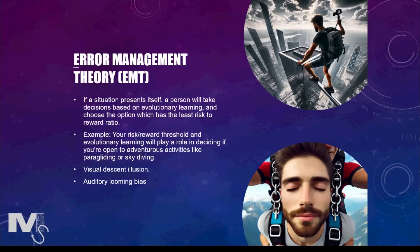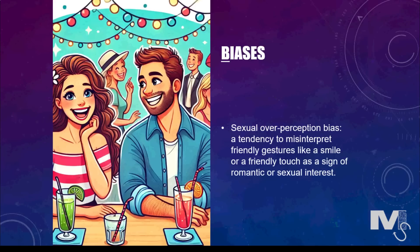The essence of error management theory is to study mechanisms which try to ensure that we are safe rather than sorry. An interesting application of error management theory is to predict adaptive biases in dating. A 2012 research study suggested that one adaptive bias in men is called the sexual over-perception bias — meaning men have a tendency to interpret friendly gestures like a smile or a friendly touch from a potential mate as a sign of romantic or sexual interest, because they are programmed not to miss out on an opportunity to reproduce.